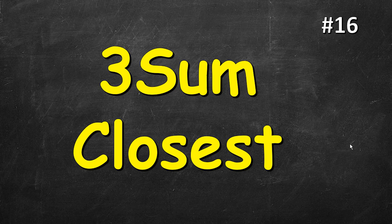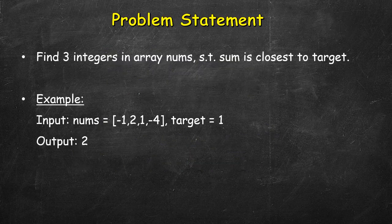In this video we will solve the 3Sum Closest problem. It's somewhat similar to the 3Sum problem, but the difference is that the exact sum may or may not be present. So we have to find three integers in the given array such that their sum is closest to the target.